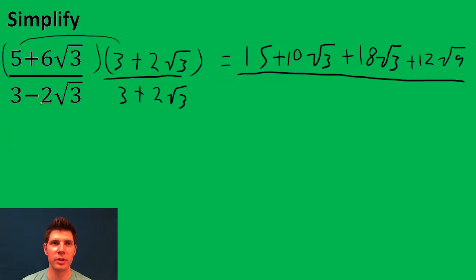Then on bottom, same idea. 3 times 3 is 9. 3 times 2 root 3 is plus 6 root 3. Negative 2 root 3 times 3 is negative 6 root 3. And negative 2 root 3 times positive 2 root 3 is negative 4 root 9.